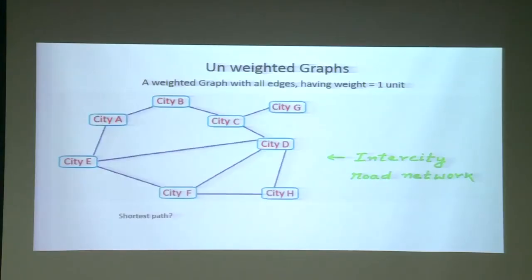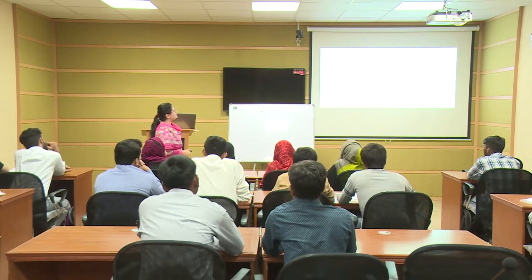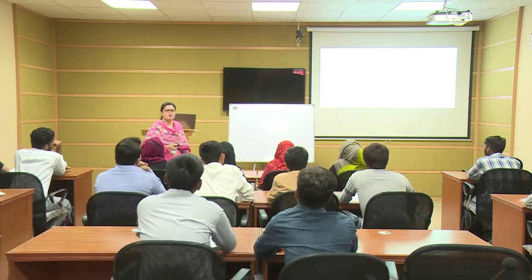What is the shortest path between A and D in an unweighted graph? There are many routes: A-B-C-D, A-E-D, A-E-F-H, and A-E-F-D. The shortest path is A-E-D because it contains fewer vertices. Fewer vertices denotes the shortest path between two cities.